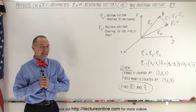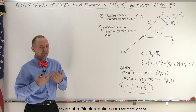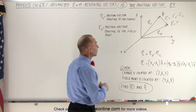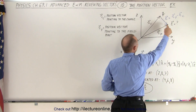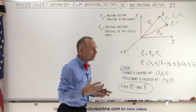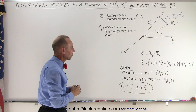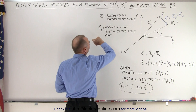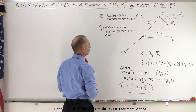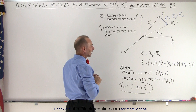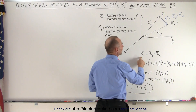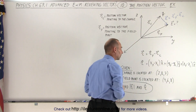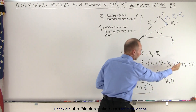Welcome to our lecture online. Let's do a simple example to see how position vector stuff works. We have two vectors: one defined where the charge is located, and one defined where the field point is. R sub C is the position vector pointing to the charge, and R sub F is the position vector pointing to the field point. The vector defining the position of the field point relative to the charge is found by taking the difference between the two vectors.